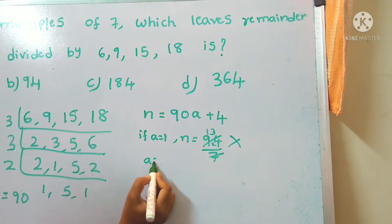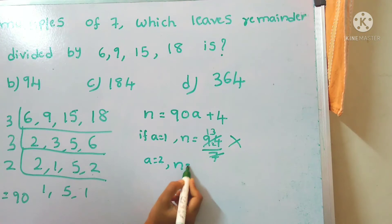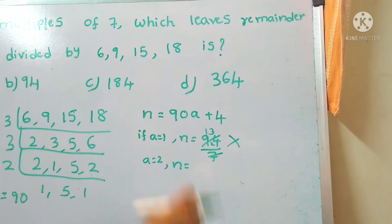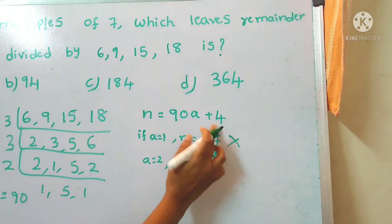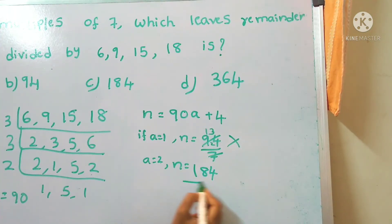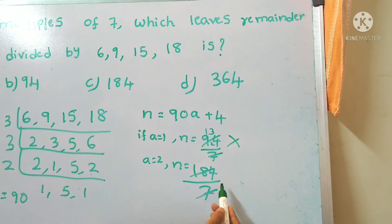Let's take a equals to 2, then n equals to 9 times 2 is 18, that is 180 plus 4, 184 divided by 7. 7 times 2 is 14, 7 times 6 is 42, it gives 2 but it is not divisible by 7.